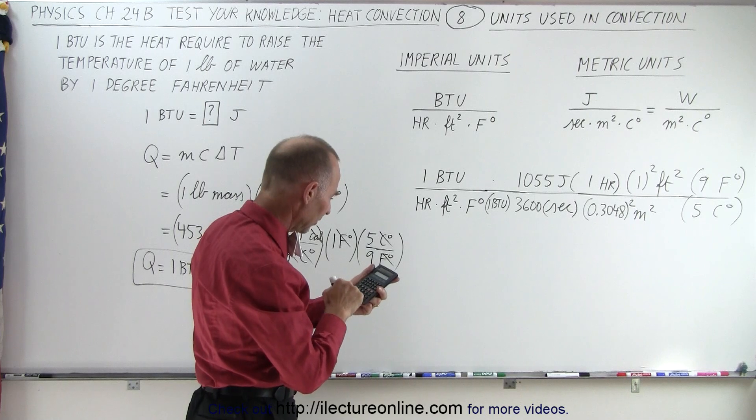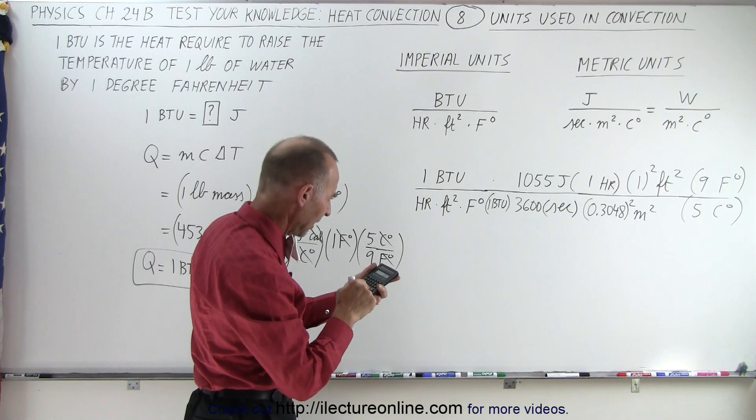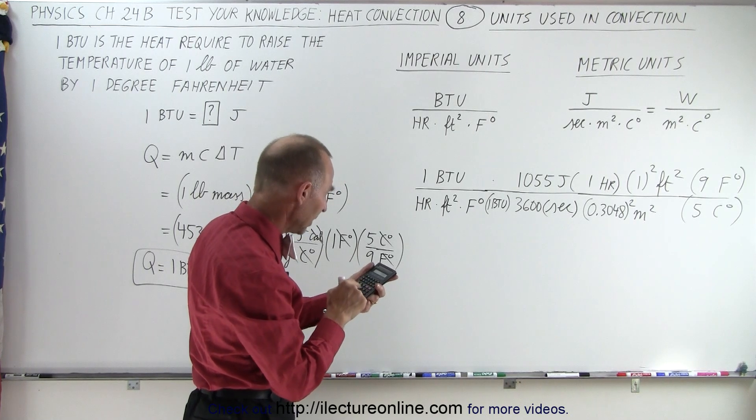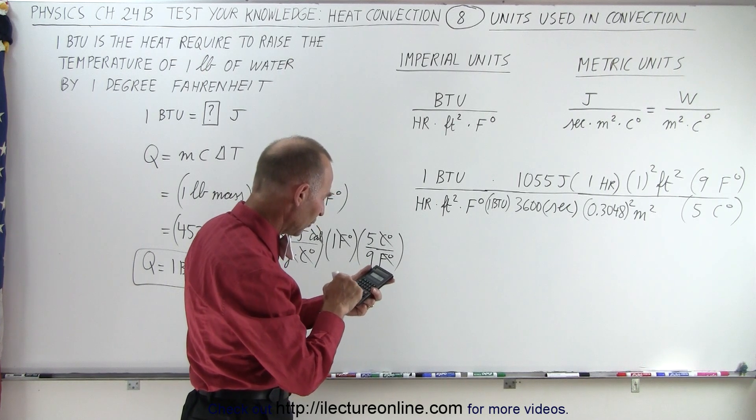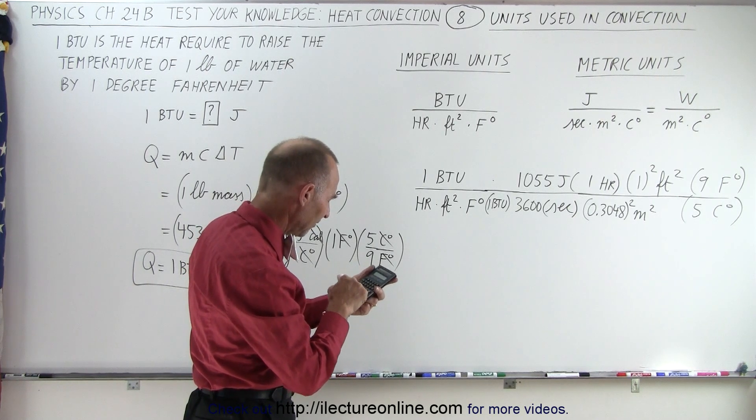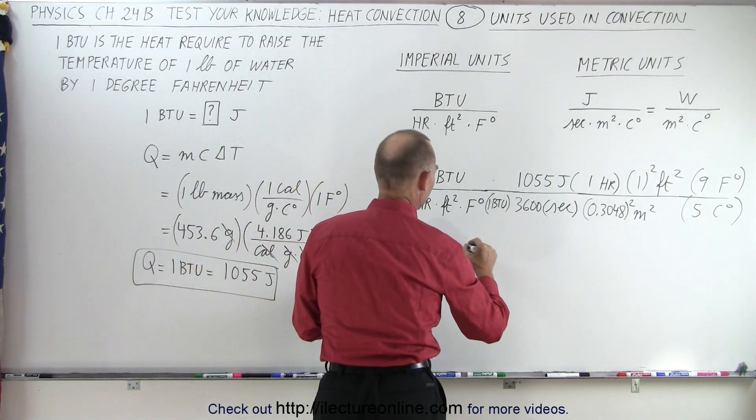So let's start over again. We have 1055 times nine divided by 3600, divide by 0.3048 squared, and divide by five equals...